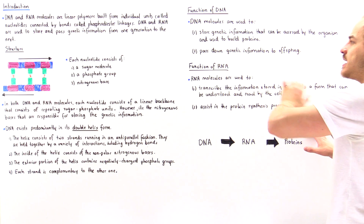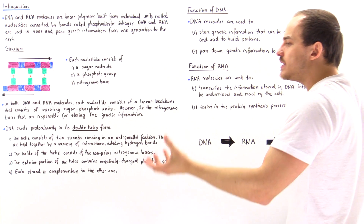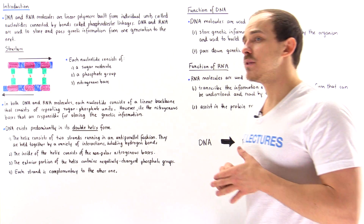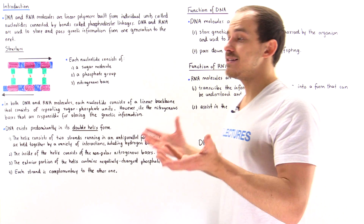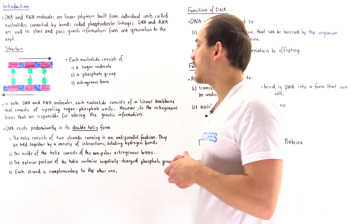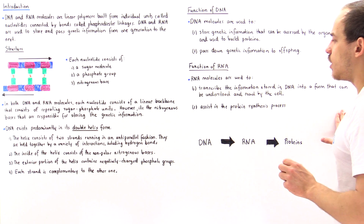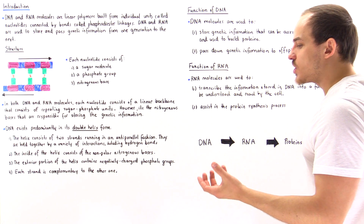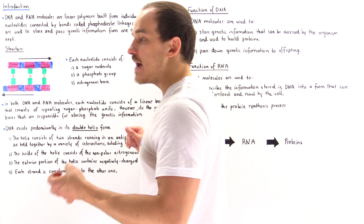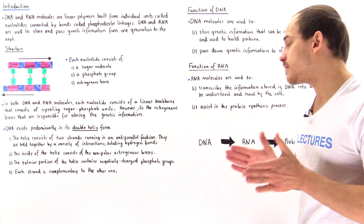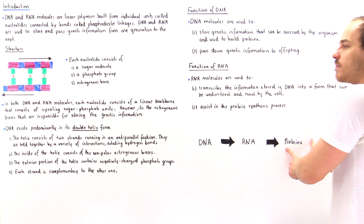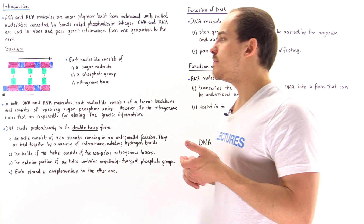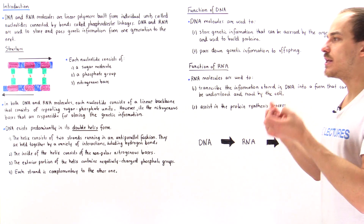The other function of DNA is to pass genetic information from one individual to offspring. When we reproduce, we replicate DNA molecules and pass those down to the offspring, with slight variations. The second function of RNA is to assist in protein synthesis. We have different types of RNA molecules — for example, messenger RNA (mRNA), which is used directly to build proteins, and other RNA molecules such as tRNA that assist the ribosome in forming that protein.